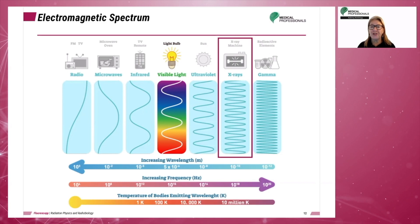All energies on the electromagnetic spectrum have properties in common. They have no mass, no charge, travel at the speed of light, and travel in straight lines.